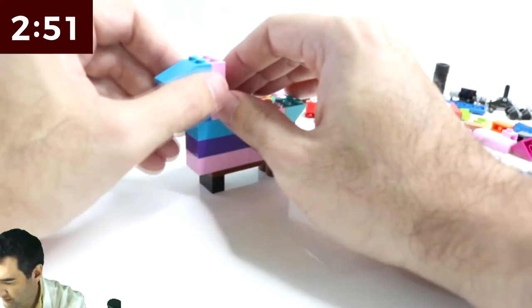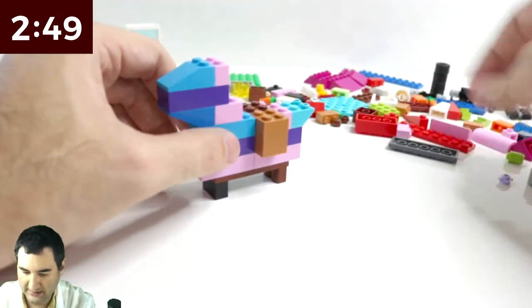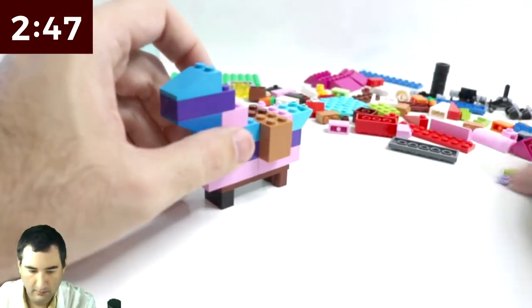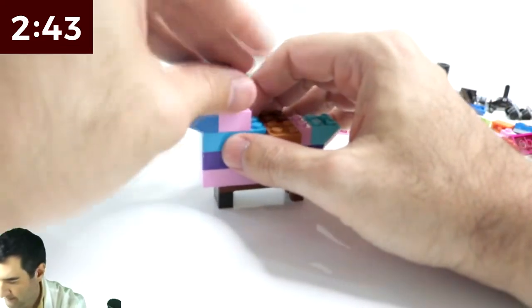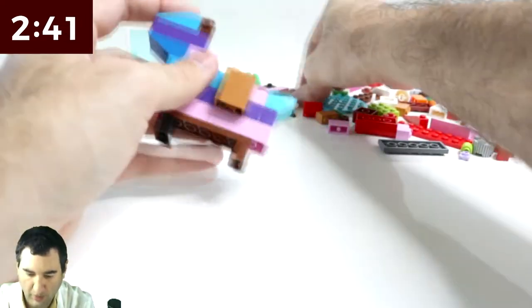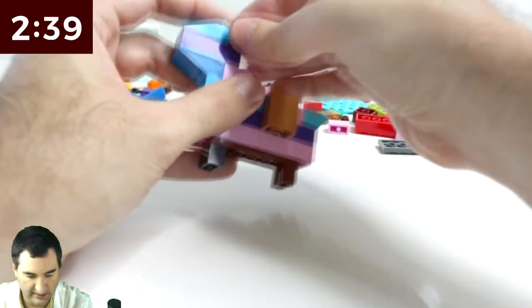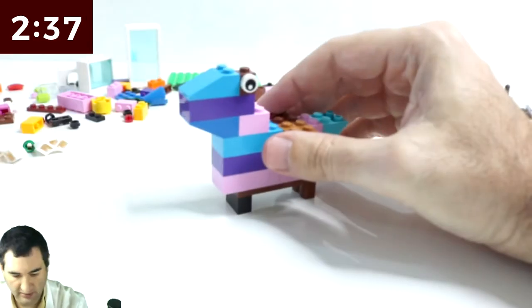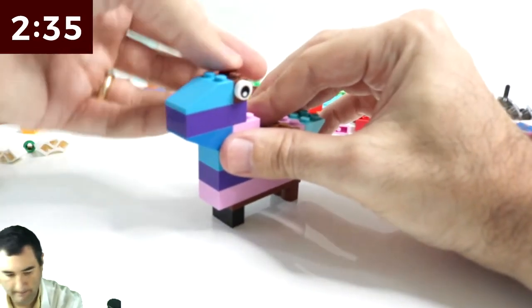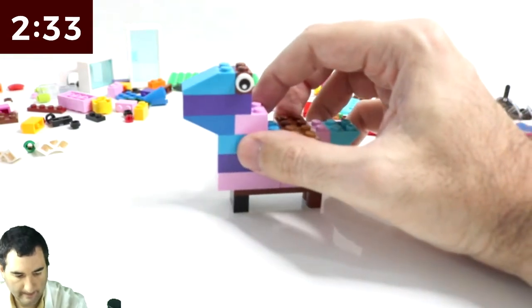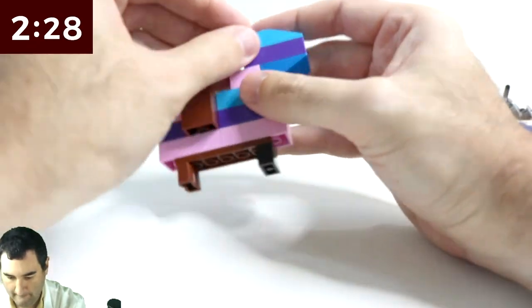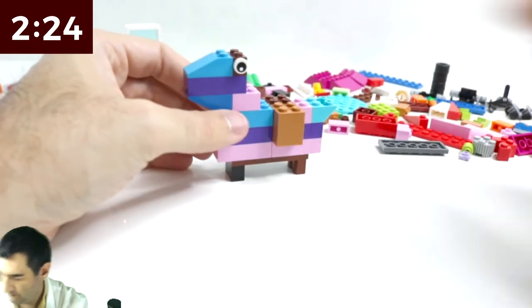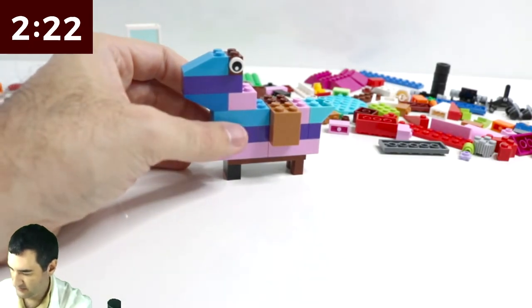So the only other thing we could do is we could do eyes. Let's see. One of these. And they have little wide eyes on the side of their heads. Something like that. Then what else do we got?